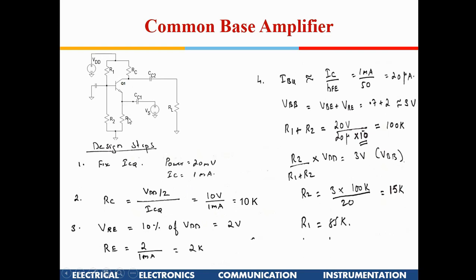The emitter voltage should be 10% of VDD, so 2 V. With 1 mA flowing through RE, we get RE = 2 kΩ. IB = IC / hFE = 20 µA. The base voltage VBB equals the emitter voltage (2 V) plus VBE (0.7 V), with a little margin at the knee point, giving approximately 3 V at the base.